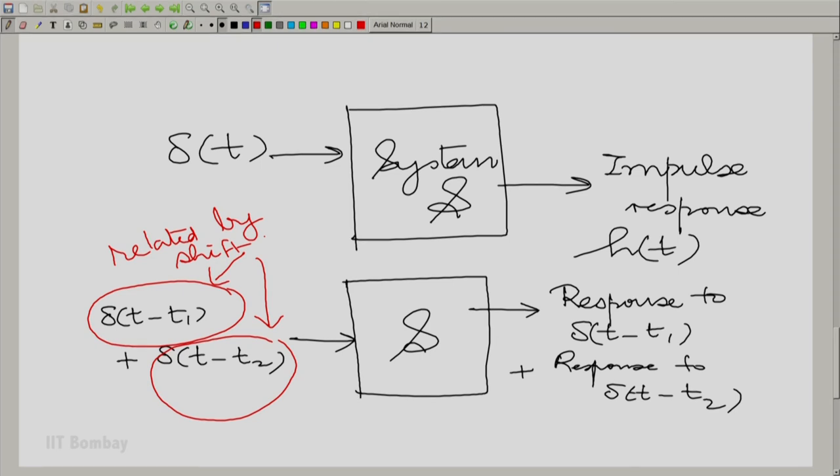what we hope is that if the system is shift invariant, once I know the response to this delta t, I should automatically know the response to this, it should just be shifted by t1. And I should automatically know the response to this as well. It should again be shifted by t2.